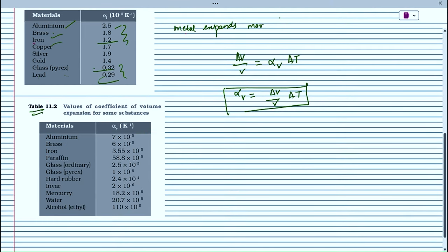Consider the table of coefficient of volume expansion for some substances. Aluminum, bronze, and iron have higher values of linear expansion coefficient, while glass and pyrex have lower values — metals expand more than other substances. For volume expansion, alpha_V is defined as delta V divided by V times delta T. Ideal alcohol has the highest value of coefficient of volume expansion, while metals have smaller values. The value of coefficient of volume expansion is not always constant — it can vary according to the behavior of the substance.